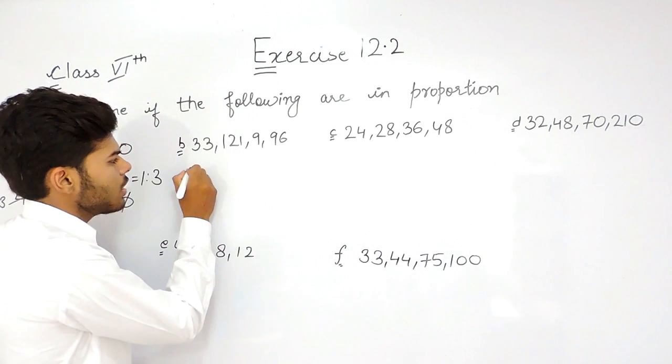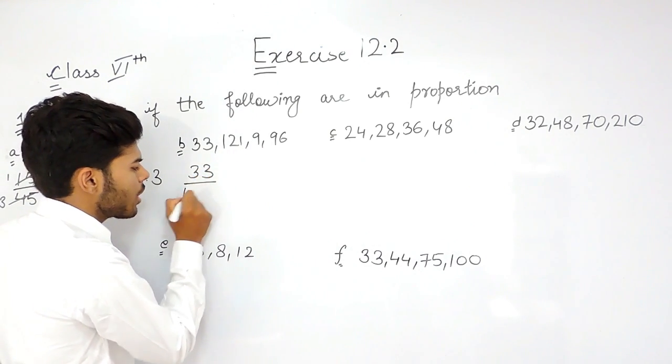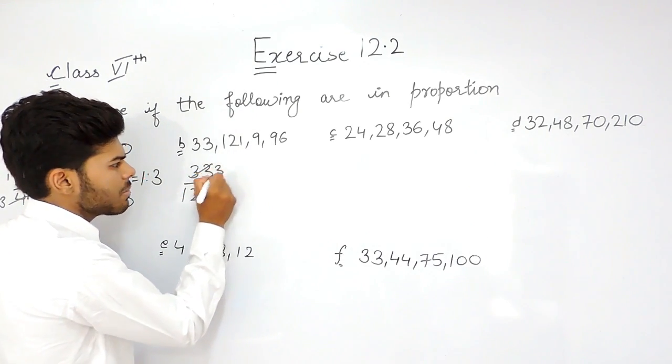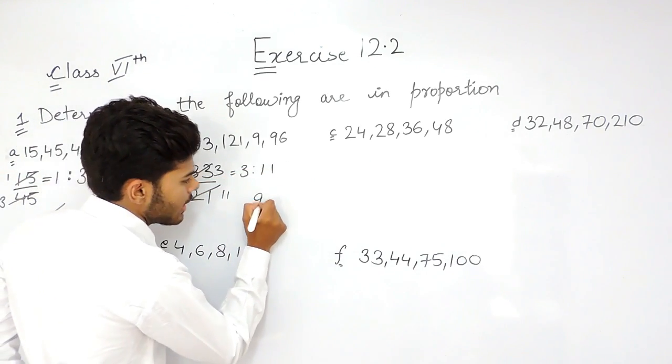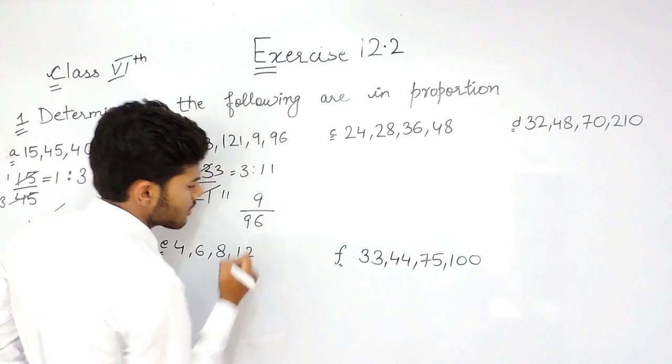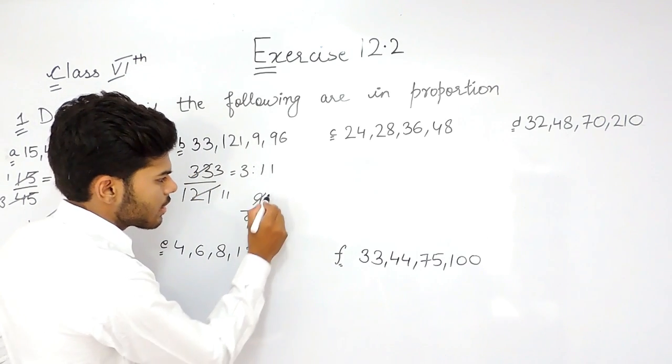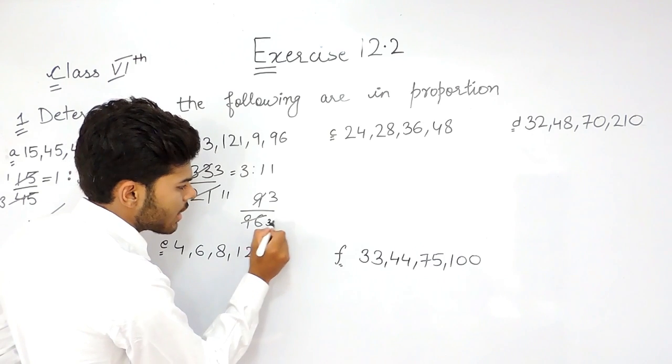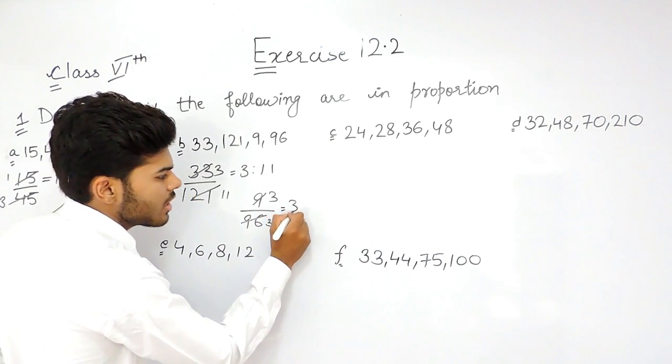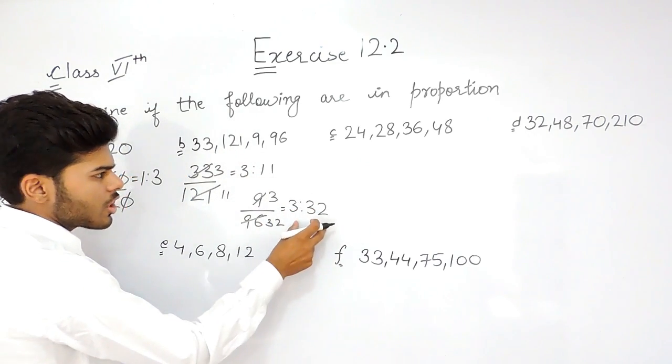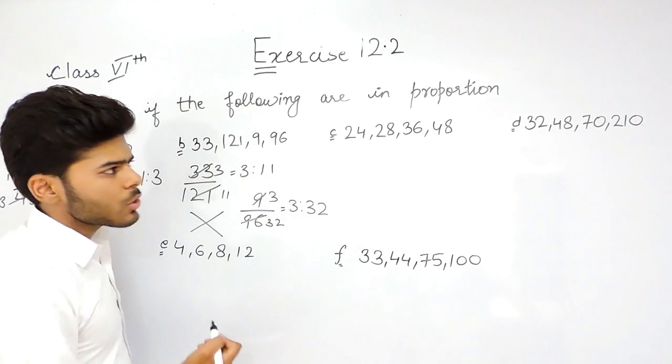Now the second one, 33 upon 121. That's 11, 3 times 11, 11 times 11, so that equals 3 ratio 11. And 9 upon 96, that is 3 times 9, 3 times 32. This cannot be cancelled out, so the ratio is 3 ratio 32, which is not equal to 3 ratio 11. So this is not in proportion.